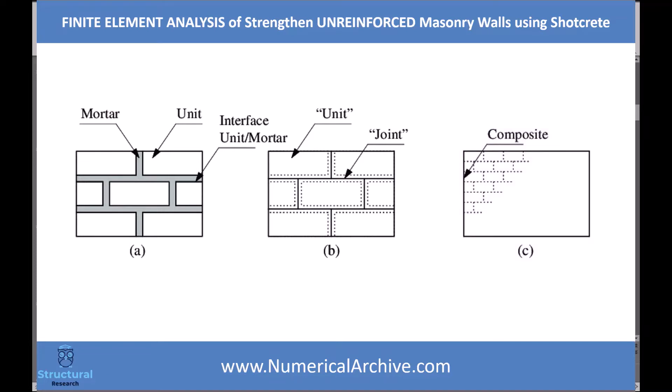In micro modeling, mortars are simulated separately, so the results are very accurate but the cost of calculation is also very high. In macro modeling — figure C — the wall is simulated as a composite body whose behavior is a combination of mortar and blocks. The accuracy of this method is low and the calculation cost is also very low.